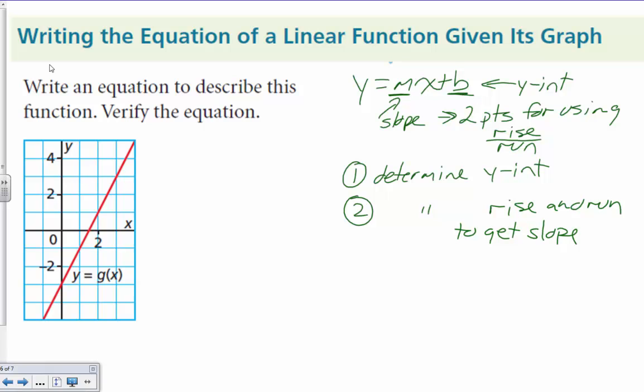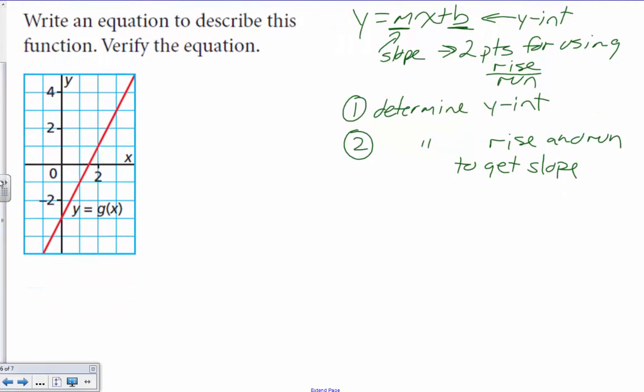Hopefully this should be pretty straightforward. We'll go over to our graph and we've got a y-intercept of b equals negative 3.